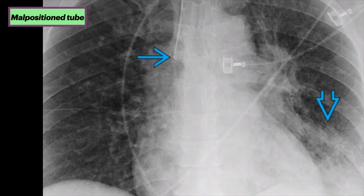The next case is a malpositioned tube. On this chest x-ray, note the malpositioned endotracheal tube with the tip in the right main stem bronchus distal to the carina, with resultant atelectatic changes in the left lung.